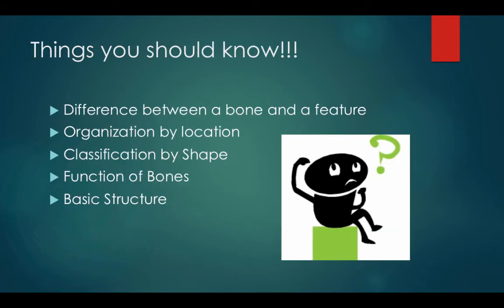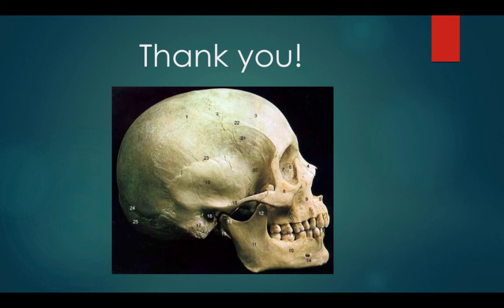So things you should know from this video: the difference between a bone and a feature; the organization by location, including the difference between the axial and the appendicular skeleton; the classification of bone by shape — short bones, long bones, flat bones, and irregular bones; the function of bones, such as their ability to help support and protect; and then the basic structure of bones. Thank you for listening to this video. I hope that you have learned something and continue to advance in your studies.